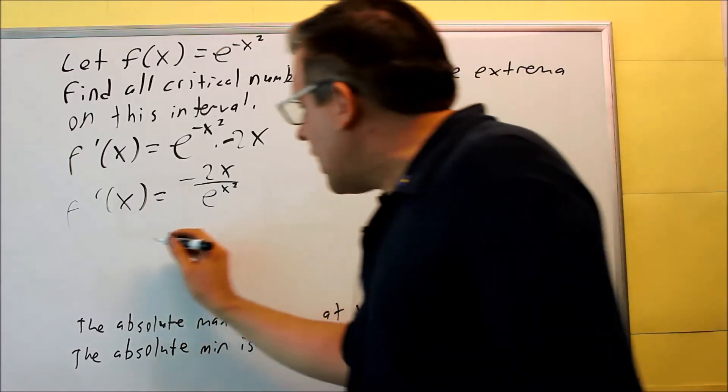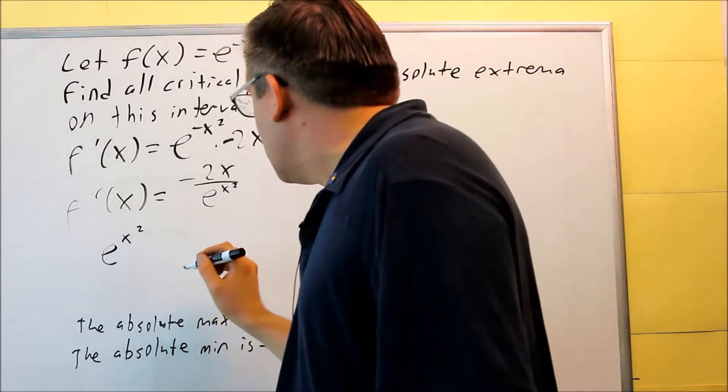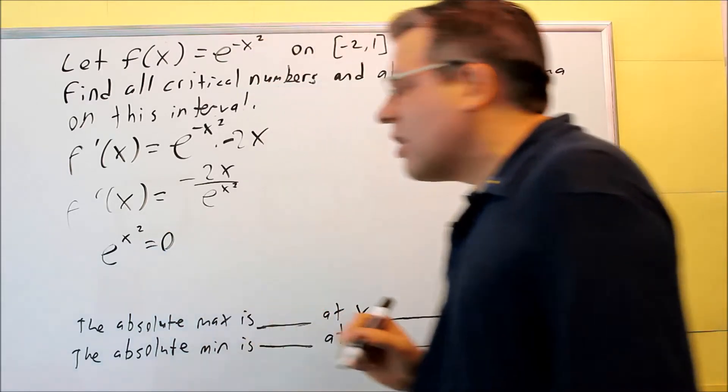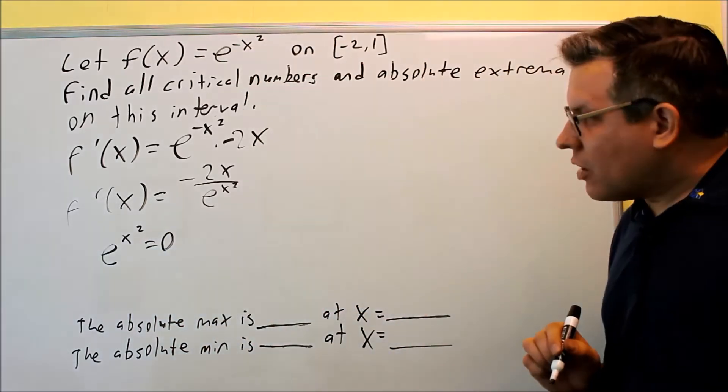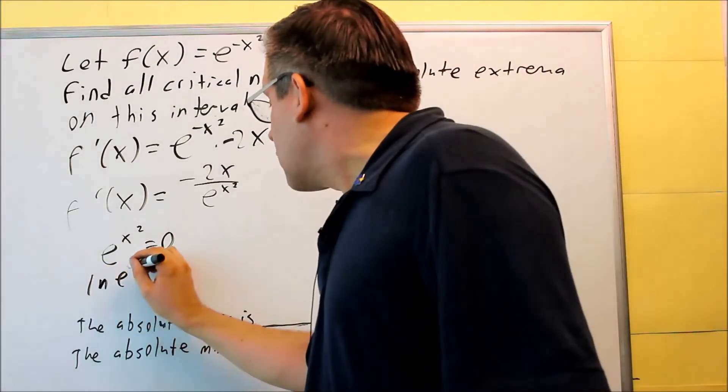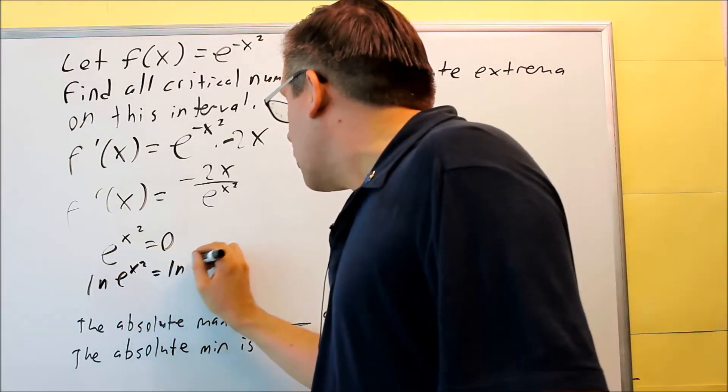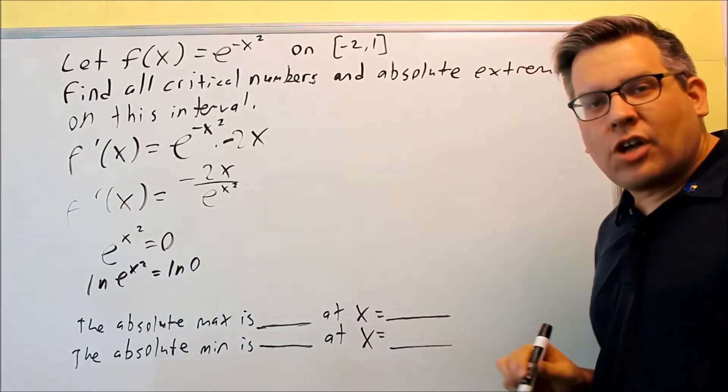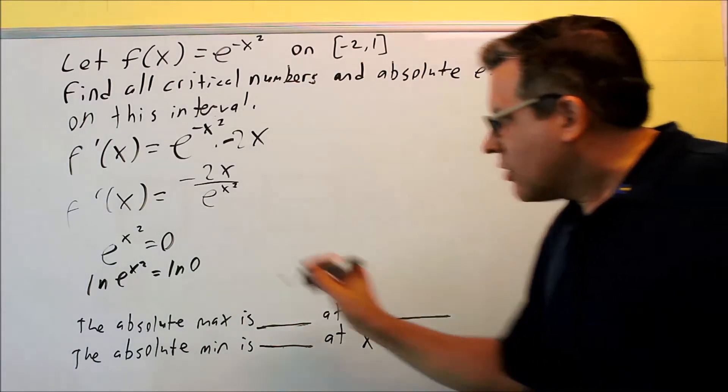Now, if you're unsure about that, you could always take the bottom and try and set it equal to zero to see if you get something undefined. In order to solve something like this, you'd have to take the natural log of both sides, but the problem there is you can't take the natural log of zero. So because of that, that shows that the bottom can never be equal to zero.